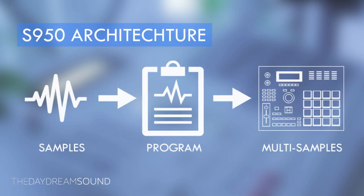In regards to the S950, its sampling architecture is laid out so that multi-sampling is easily attainable. The S950 has essentially two sections that handle this. The sample edit section contains all your samples where you have access to them — think of this as a database of your samples. Following that is the program section, where you can organize samples and create what Akai calls keygroups, which essentially is a form of organizing your multi-samples.